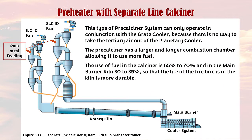The preheater with separate line calciner can only operate in conjunction with the grate cooler, because there is no way to take the tertiary air out of the planetary cooler. The precalciner has a larger and longer combustion chamber, allowing it to use more fuel. The use of fuel in the calciner is 65 to 70 percent, and in the main burner kiln 30 to 35 percent, so that the life of the fire bricks in the kiln is more durable.